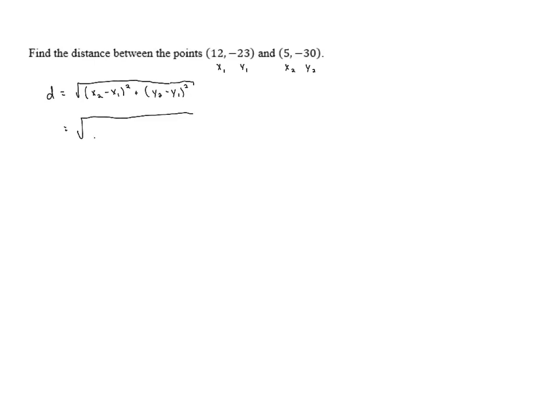So inside these parentheses we've got (5 - 12)² and then we have (-30 - (-23))². Now 5 - 12 is -7 and we can rewrite -30 - (-23) as -30 + 23.